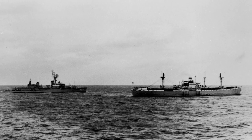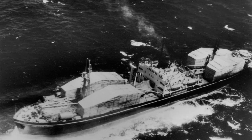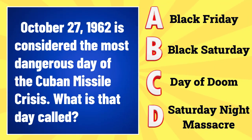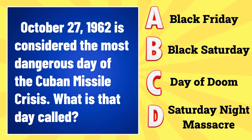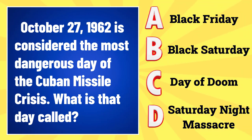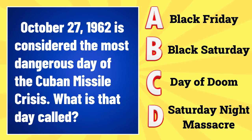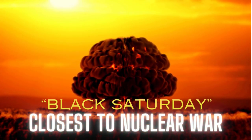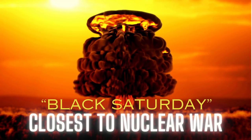As some of the Soviet ships were approaching the U.S. blockade, the world held its breath as the United States and the Soviet Union were seemingly on the brink of war. October 27th, 1962 is considered to be the most dangerous day of the Cuban Missile Crisis. What is that day called? A. Black Friday, B. Black Saturday, C. Day of Doom, or D. Saturday Night Massacre? The answer is Black Saturday. October 27th is called Black Saturday because it really was the most dangerous day of the crisis — the closest we ever came to nuclear war.